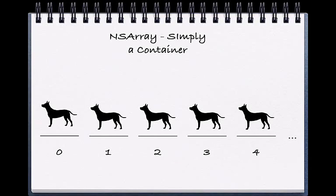An array can be empty — for example, it can have no objects in it — or it can have thousands of objects in sequential order. It's worth noting that it can only hold objects and not primitives. Examples of primitives that we've learned about have been integers, bools, and floats. It's also important to note that generally we don't add empty slots in an array. If there are three objects in your array, then it must take up the first three slots. The array cannot be any longer.